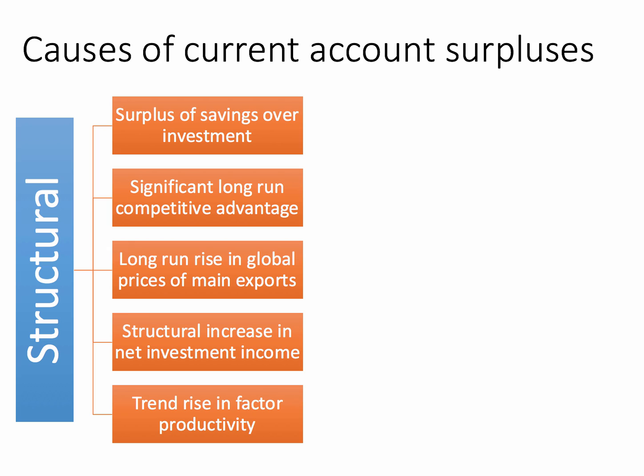More importantly in terms of explanation is the fact that many of these countries have built up and protected a significant long-run competitive advantage in one or more industries. When one thinks about the German economy, one thinks about manufacturing sectors — car making all the way through to household goods and electronic products. Likewise in South Korea, companies such as Samsung, LG, and Hyundai. Countries that build up significant competitive advantage nearly always see a significant improvement in their trade performance.